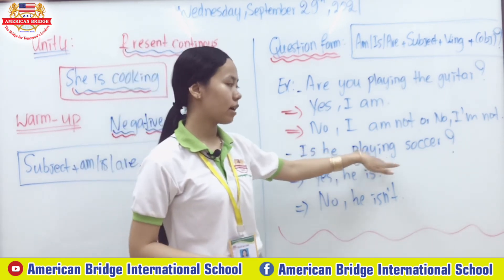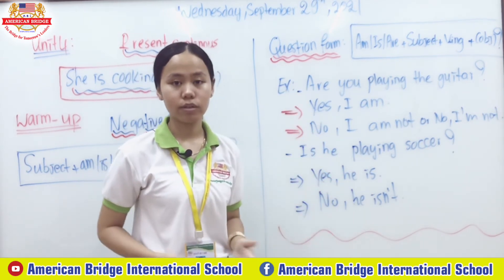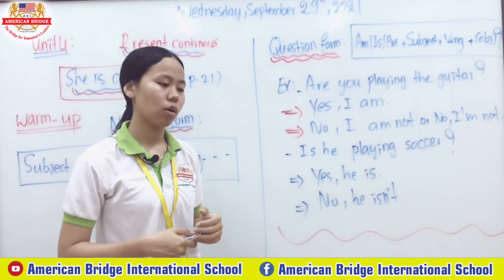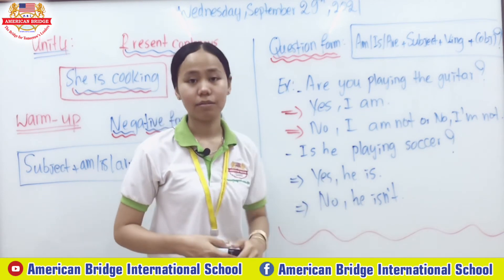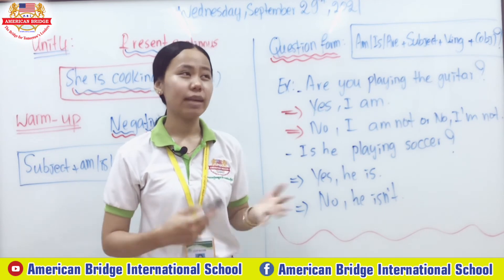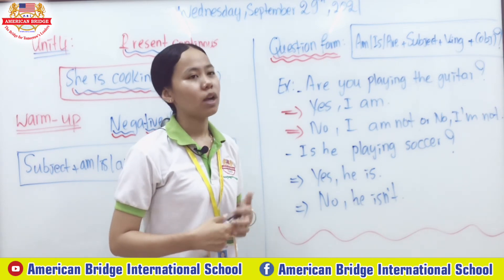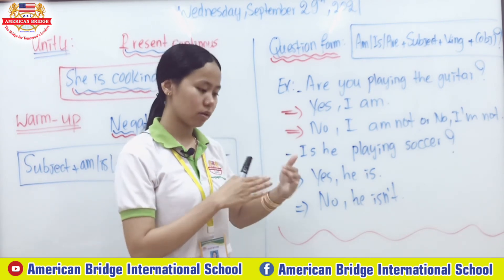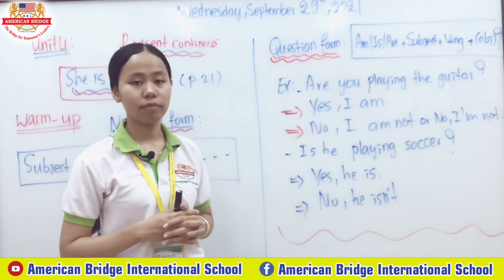'Playing' comes from the word 'play,' and we have the object. To respond, since the question uses the verb 'to be,' you respond with that same verb to be — it depends on the subject. So: 'Yes, he is,' 'No, he isn't.' You can say 'No, he is not' or 'No, he isn't' — 'isn't' is the short form. If they ask 'Are they playing the guitar?' — 'Yes, they are,' 'No, they aren't.' Or 'Are your parents sleeping in the evening?' — 'Yes, they are,' 'No, they aren't.' It depends on the verb to be used and also the subject.